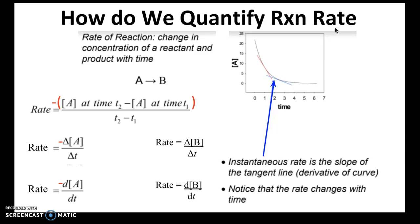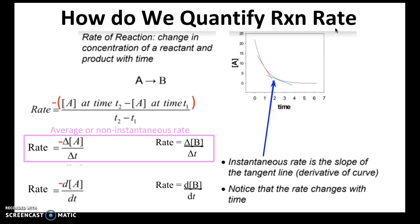We also talked about how we quantify reaction rates, and there are two main ways. One: we could determine the average or non-instantaneous rate, and that's done by measuring the change in the concentration of a reactant or product over an interval of time. If we're measuring the change in concentration of the reactant, because it decreases over time, we need to multiply that value by negative one to keep the rate positive.